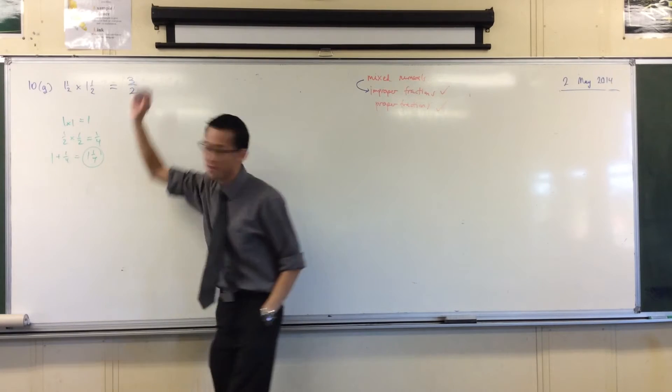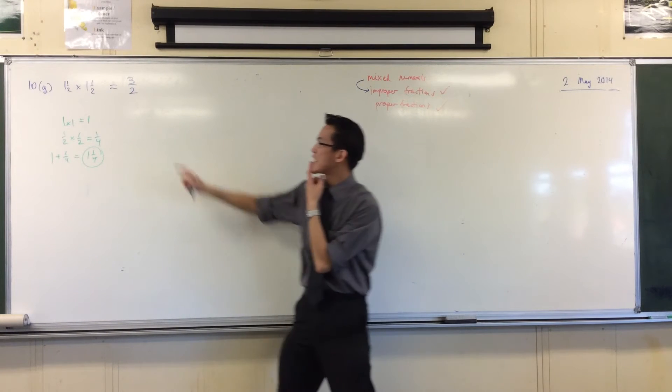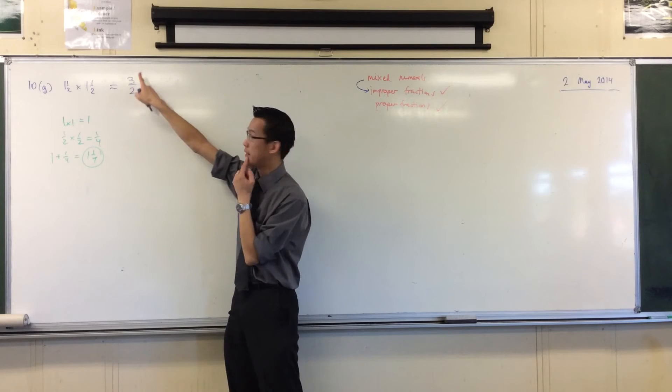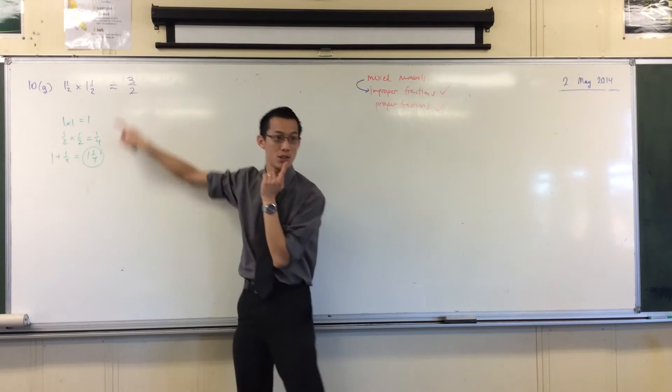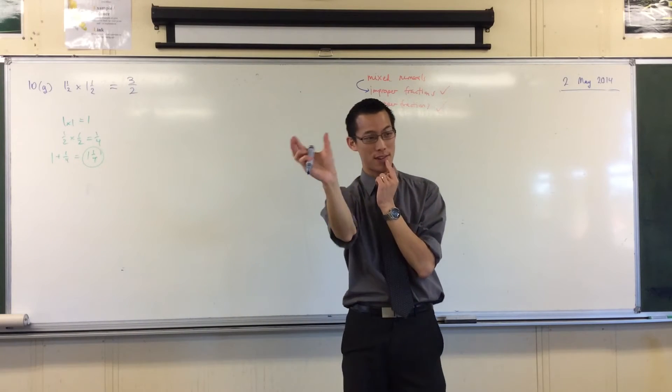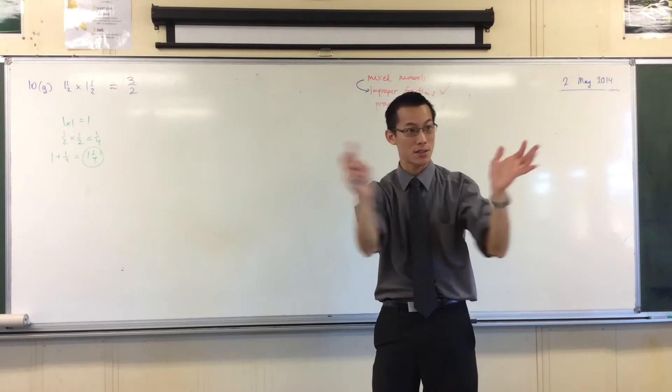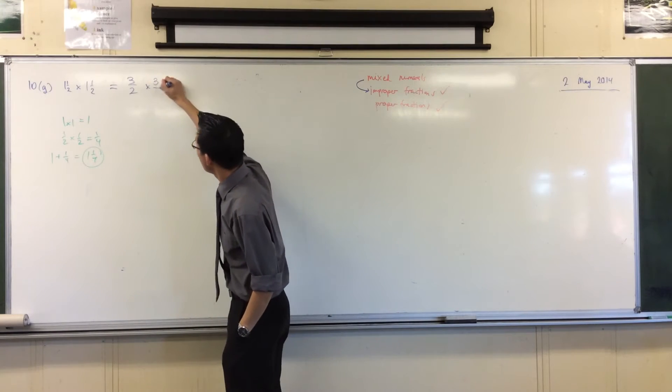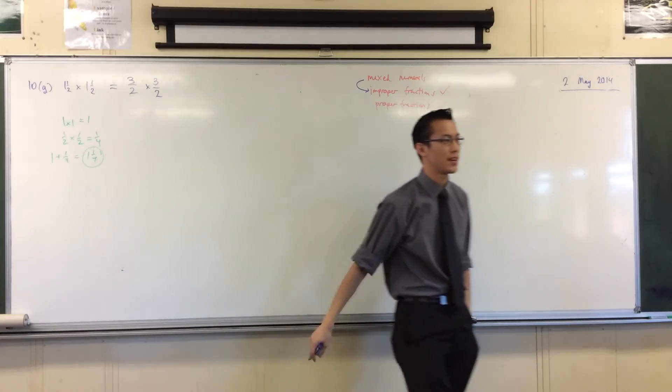And the way you can see that, right, is if I split this back up into 2 over 2 plus 1 over 2. Your 2 over 2 is your 1 out the front, and your 1 over 2 is the halves. There you go. 3 over 2, and it's the same fraction again, okay?